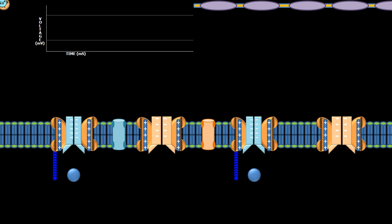This is a video about action potential. The action potential occurs on the neuron on the axon, and more specifically on the axon it occurs at the nodes of Ranvier. We're going to look at this node right here — we'll call this one node 1, this node is 2, and this node is 3.